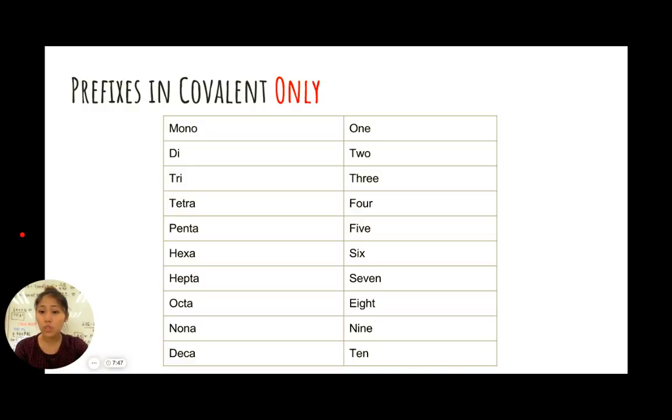You have one, which is mono; two, di; three, tri; four, tetra; five, penta; six, hexa; seven, hepta; eight, octa; nine, nona; and ten, deca.